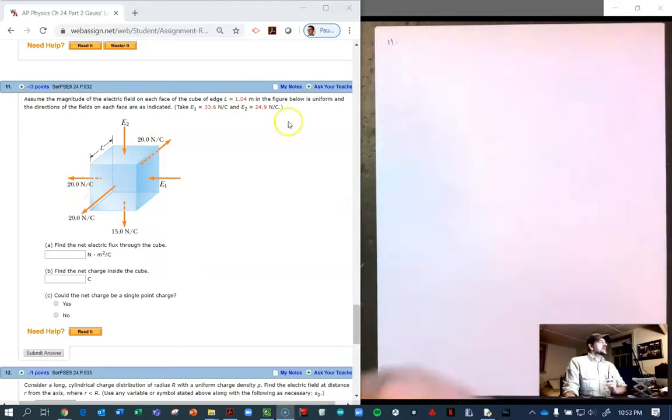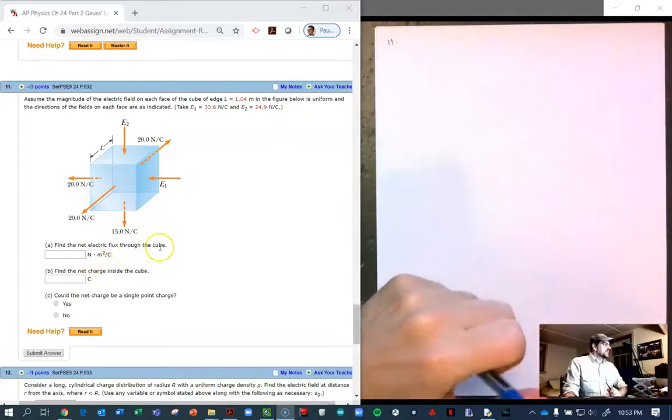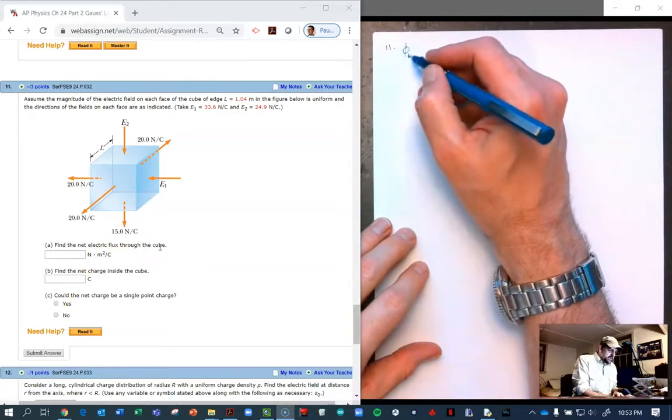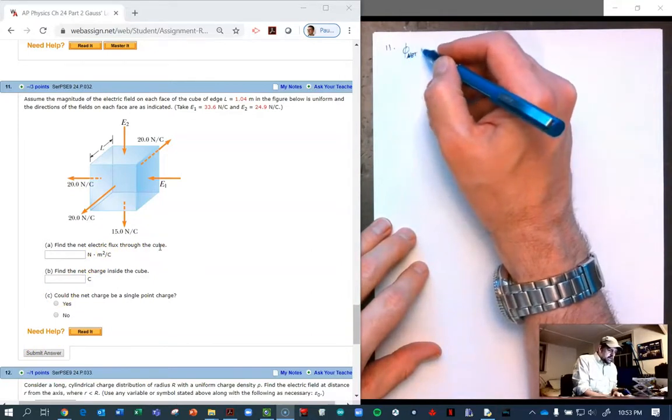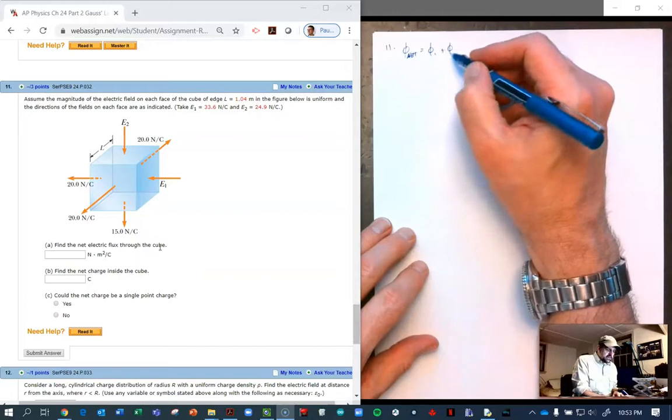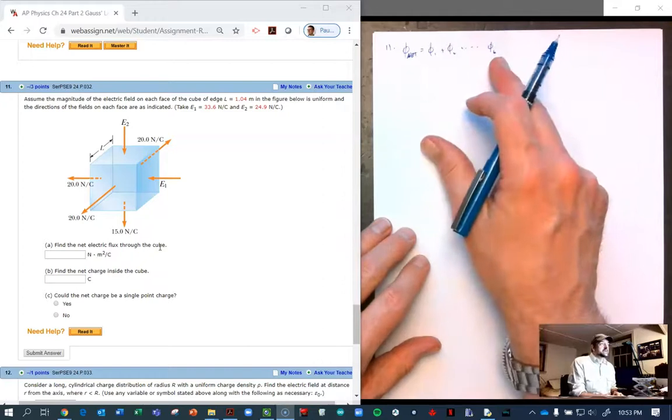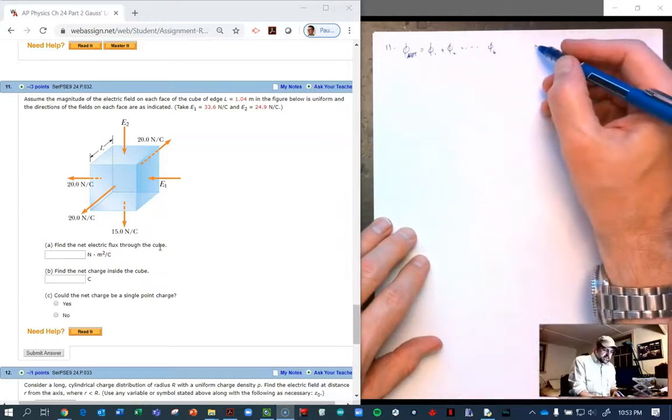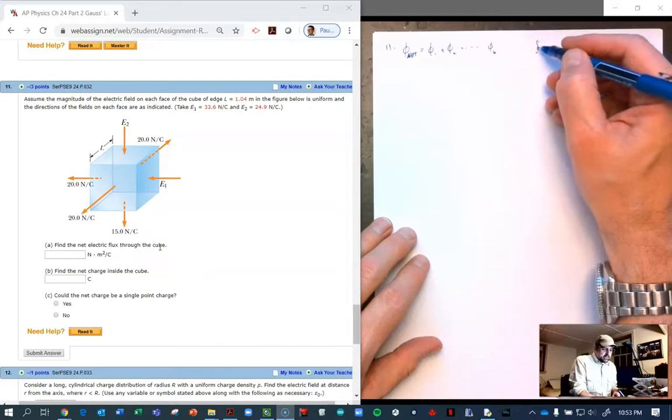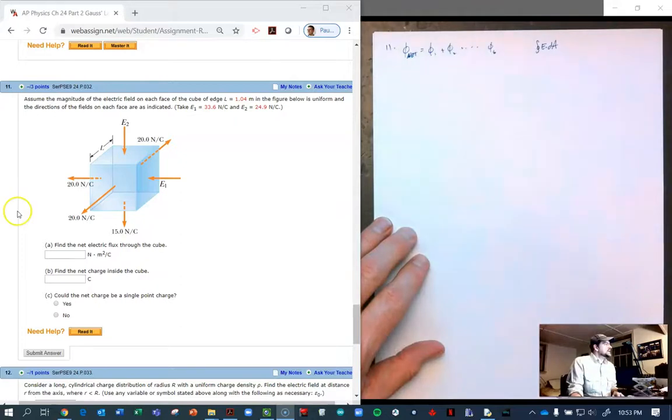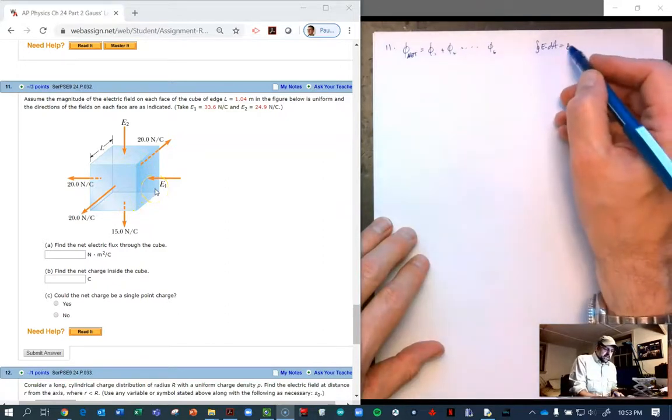So the question is, find the net electric flux through the cube. The net electric flux is simply the flux through the first surface plus the flux through the second and so on through the sixth. We know it's the integral of E dot dA, but because the electric field is uniform and constant, and the area is constant, this just becomes E times A.